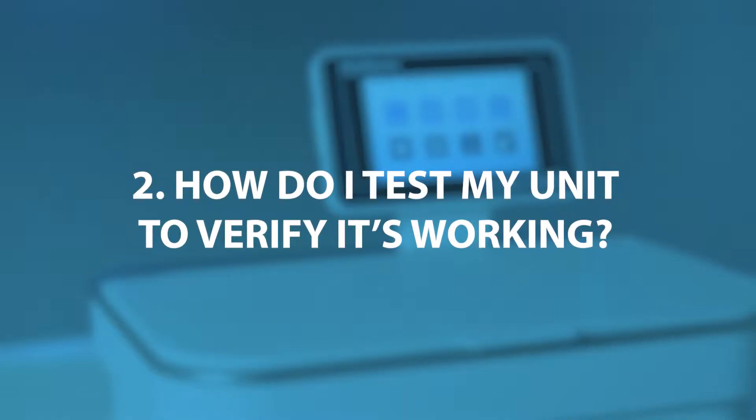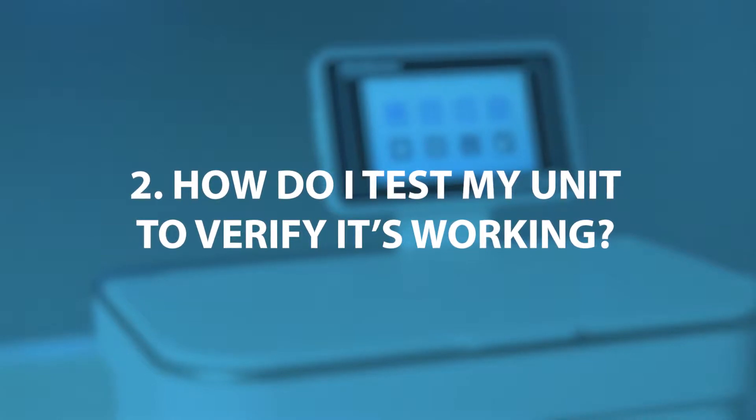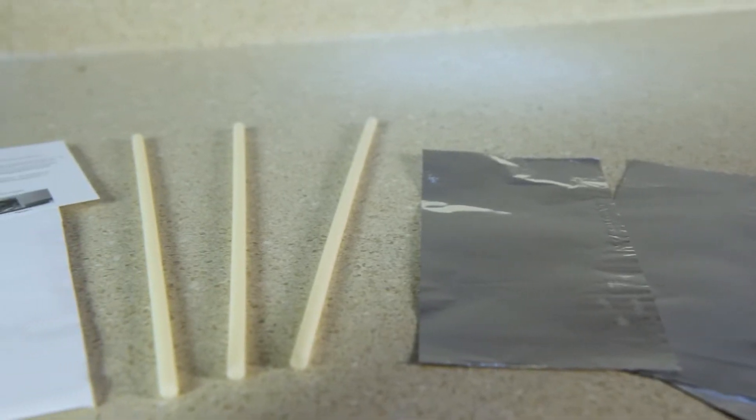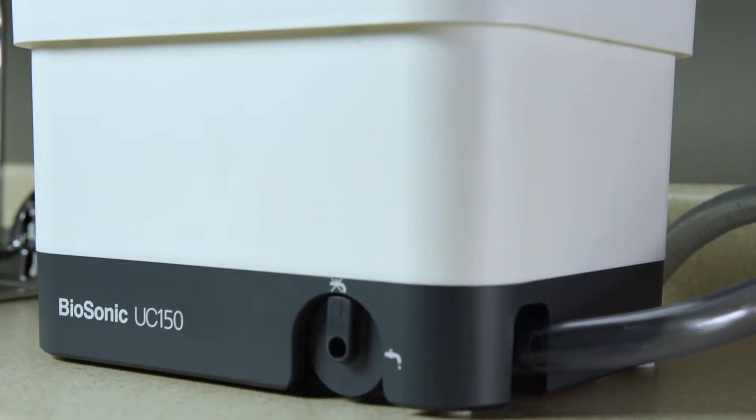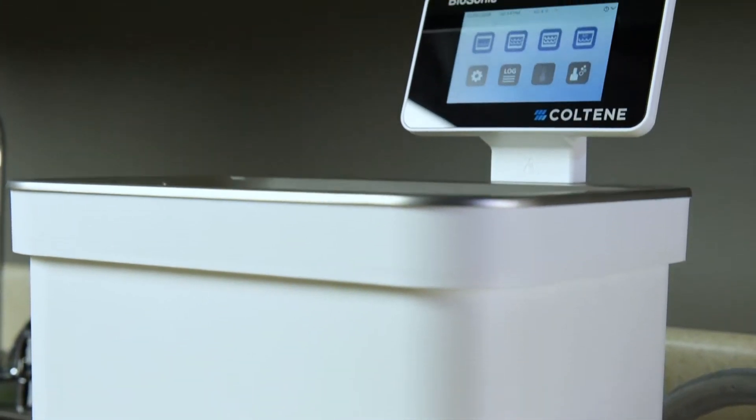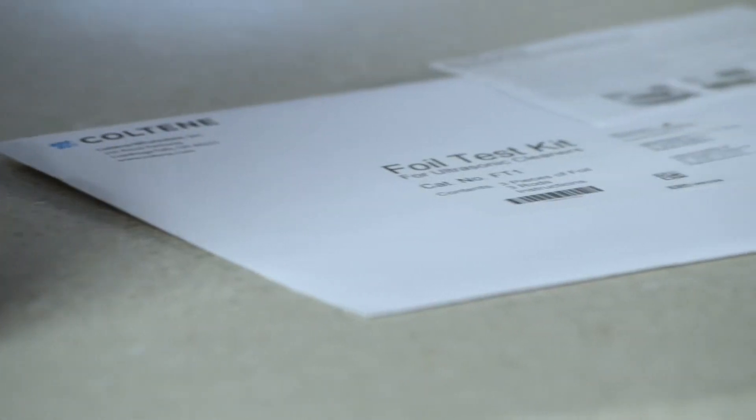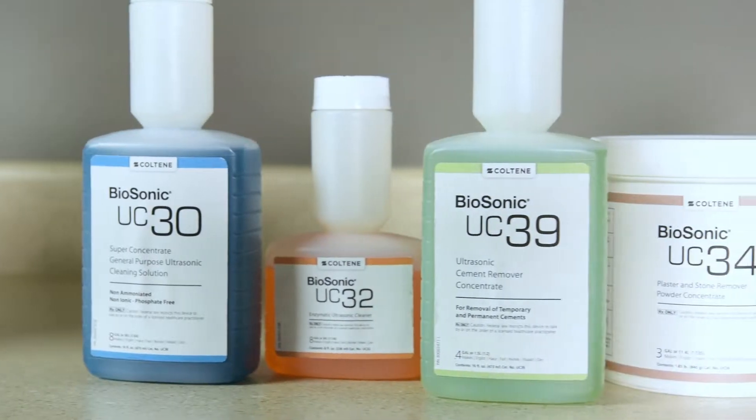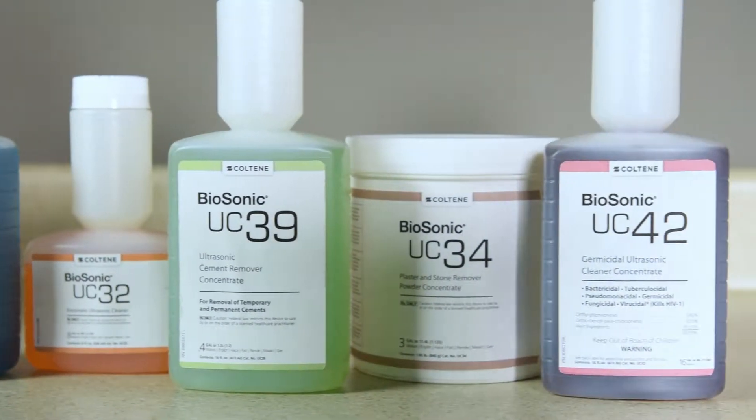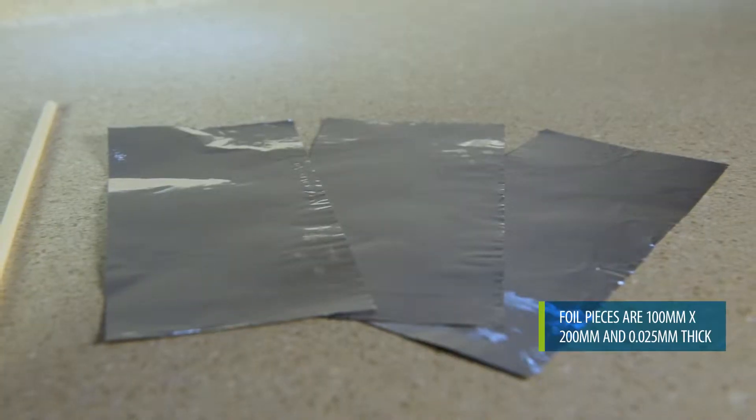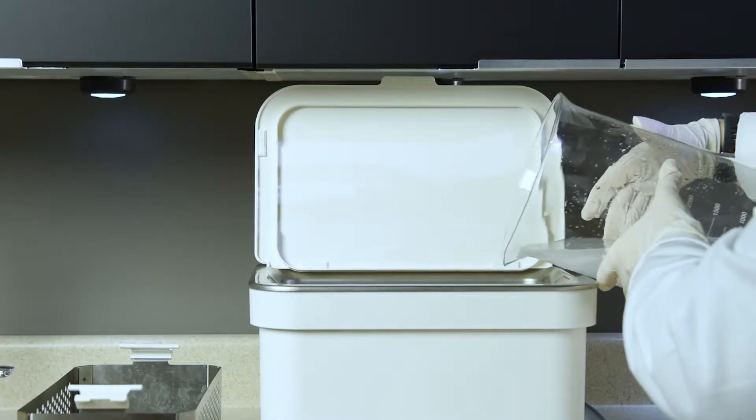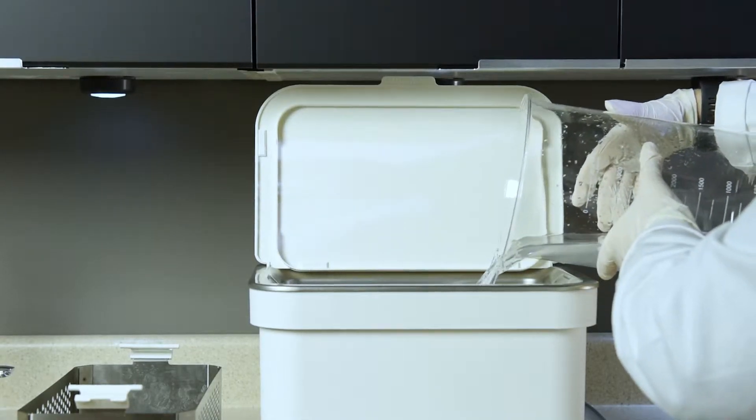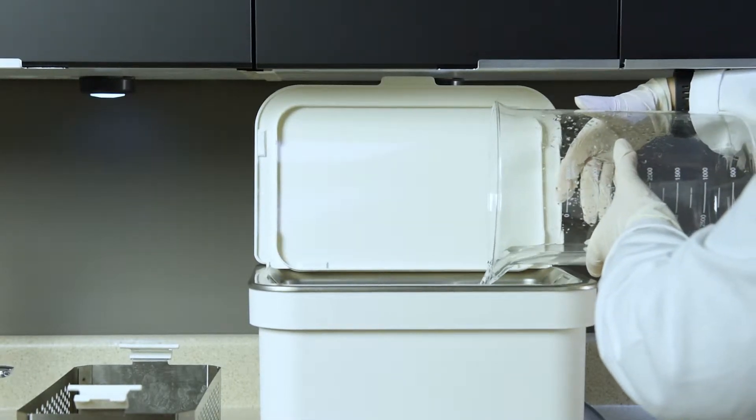How do I test my unit to verify it's working? In order to test your ultrasonic cleaning unit, you'll need to perform a foil test. To perform the foil test, you'll need your Biosonic UC150, Foil Test Kit FT1 and any Biosonic solution. If you don't have the FT1 test kit, you can use three strips of regular weight aluminum foil. First, prepare a fresh tank of cleaning solution according to the manufacturer's directions.